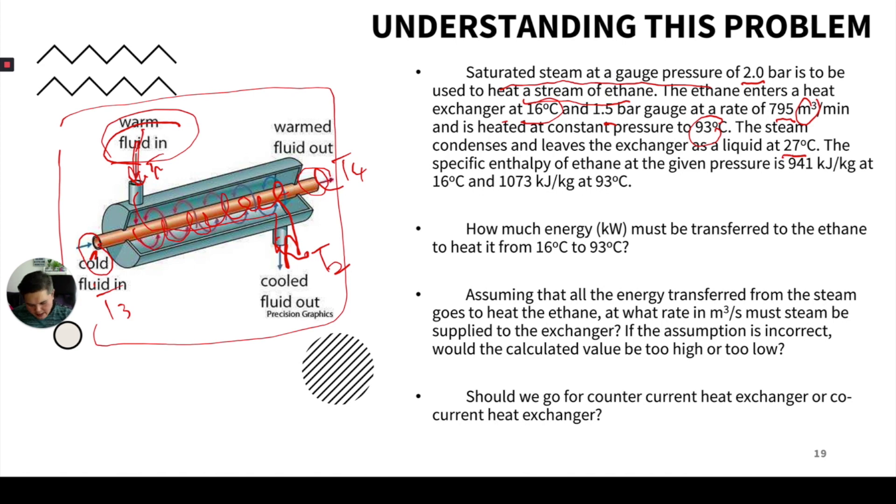The steam condenses and leaves the exchanger as liquid at 27 degrees Celsius. The specific enthalpy of ethane at given pressure is 941 kilojoules per kilogram at 16 degrees Celsius and 1073 kilojoules per kilogram at 93 degrees Celsius.